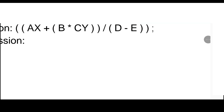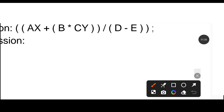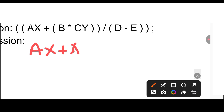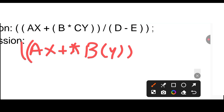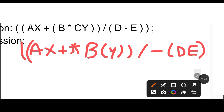Now we will write the same expression in prefix form. It will remain A*X +, and this operator will be shifted here — it will become B C Y, and then with these two brackets you can put the division and minus D E.